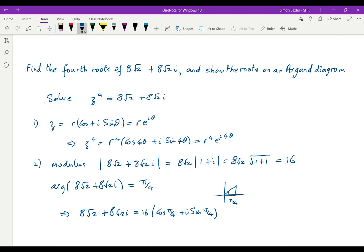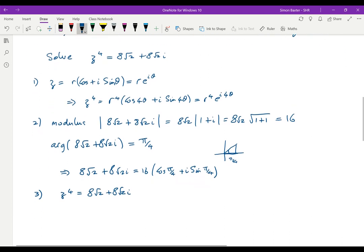Well now let's put steps 1 and 2 together. z⁴ = 8√2 + 8√2i becomes z⁴ = r⁴(cos 4θ + i sin 4θ). So let's make that 4 just a little bit better. And that has to be equal to 16(cos π/4 + i sin π/4).